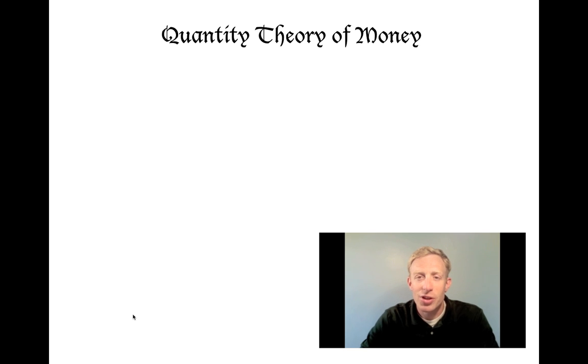The quantity theory is basically an equation: M times V equals P times Y. Let's work through those variables to understand what the quantity theory is teaching us. M is the money supply.